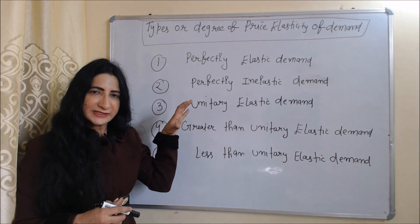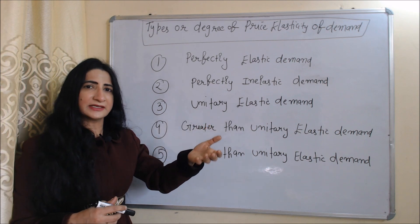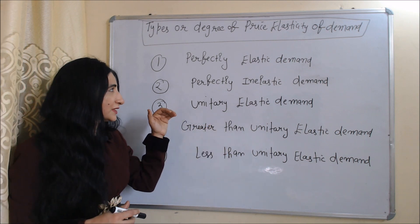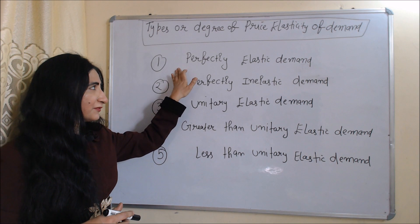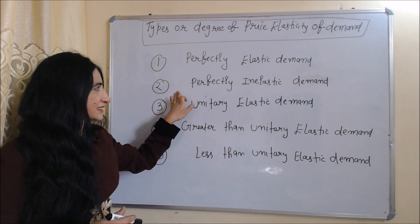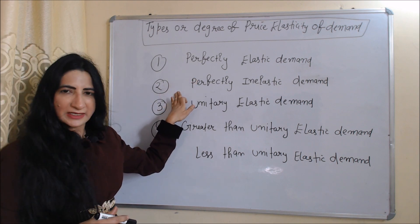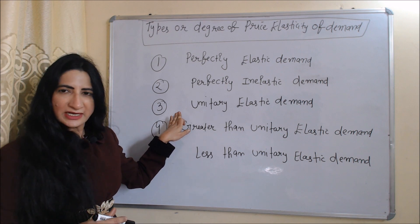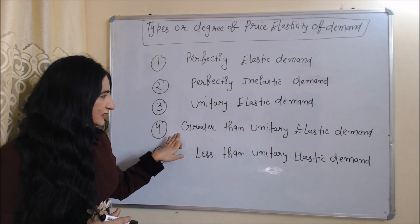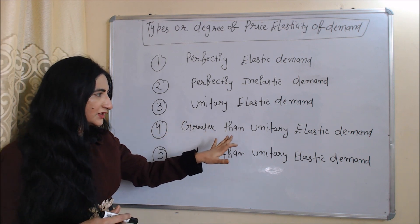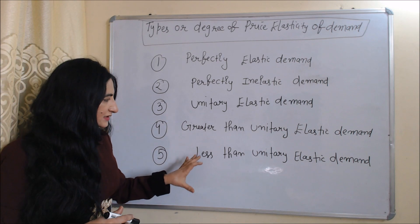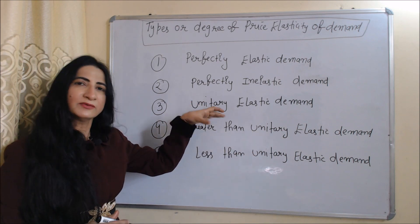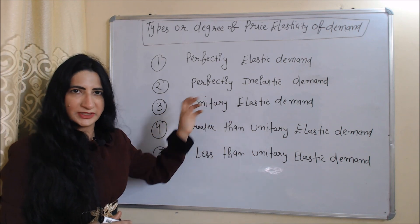Now we will see the degrees, or we can say the types, of price elasticity of demand. The first type is perfectly elastic demand. Second is perfectly inelastic demand. Third is unitary elastic demand. Next is greater than unitary elastic demand. Last is less than unitary elastic demand. We will discuss each one by one.